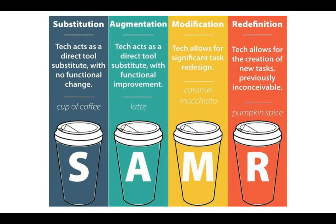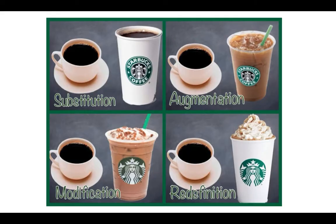In this visual, they're using the different kinds of alterations made to coffee — specifically what Starbucks has done to regular coffee — as an analogy to help you understand these different levels of tech integration. Substitution means I take a regular cup of coffee and package it in a to-go cup. That's substitution: the same thing in a slightly different format, not much of a change.